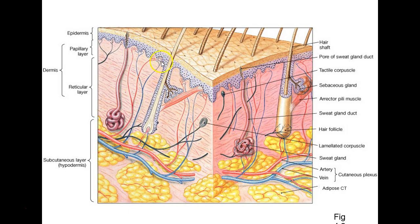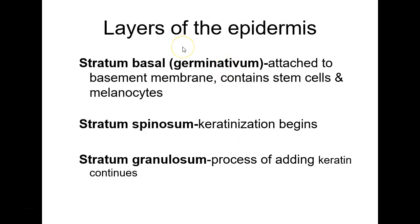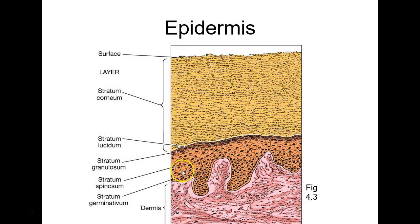The dermis has little nipple-like projections going upward called dermal papillae, which gives the papillary layer its name. The negative space where the epidermis comes down is called an epidermal ridge. Epidermal ridges can be responsible for your fingerprints.